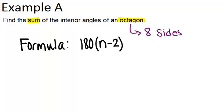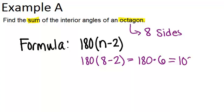So in this case, we have an octagon with eight sides, which means it will be divided up into six triangles. Because 8 minus 2 is 6. So we're going to do 180 times 6 and get our answer of 1,080 degrees. So the sum of the interior angles of an octagon is 1,080 degrees.